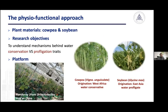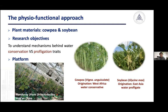Next I'm going to give another story on jointly using physiological and functional approaches to dissect the mechanisms behind water conservation versus water profligacy traits in two legume crops: cowpea and soybean. Soybean, which originates from East Asia, is considered quite a water-profligate crop — it uses quite a lot of water during its growth. On the other hand, cowpea, which originates from dry West Africa, has long been considered a water-conservative crop, using quite little water during its growing cycle.